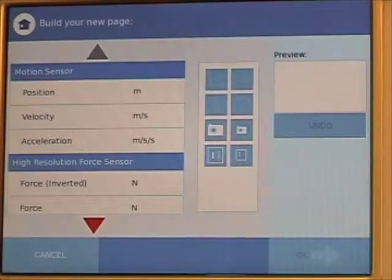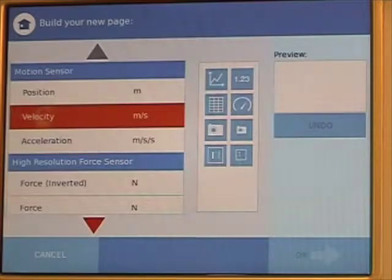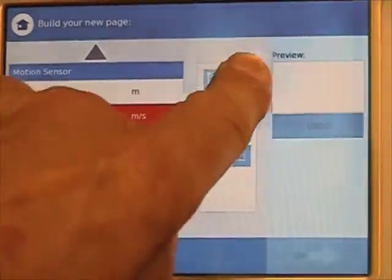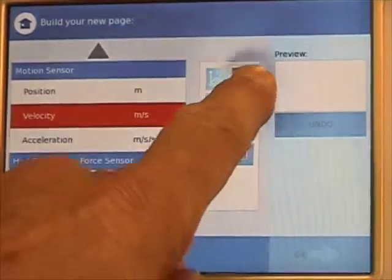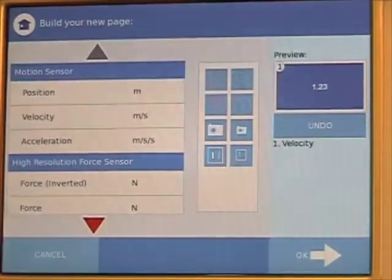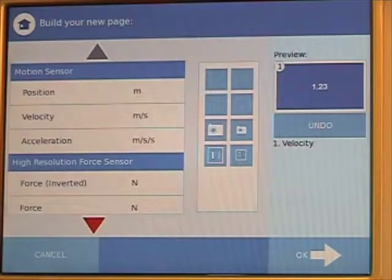We want to show the velocity, so we press velocity, and we want it to be displayed in a number format so we can press the number. You might have to press the icons a couple times to get it to record your intentions.